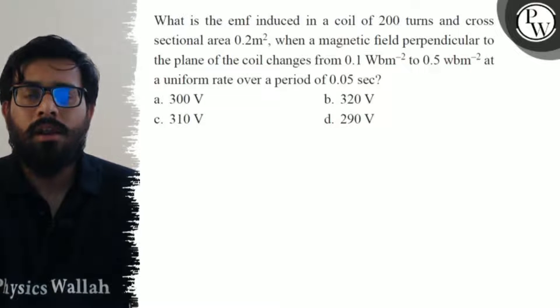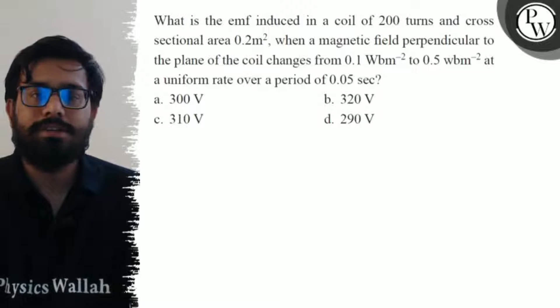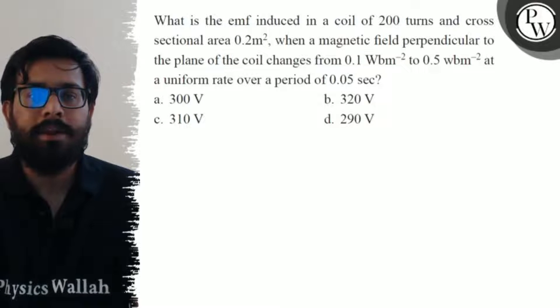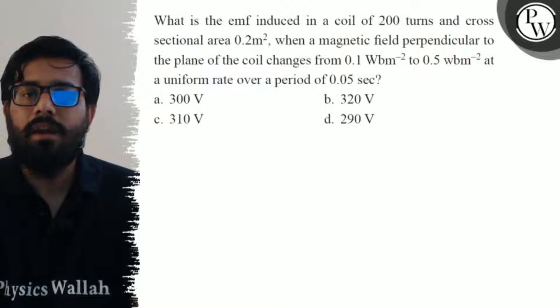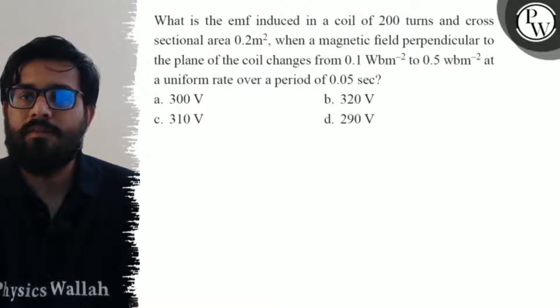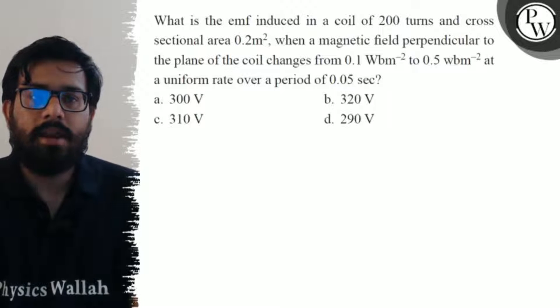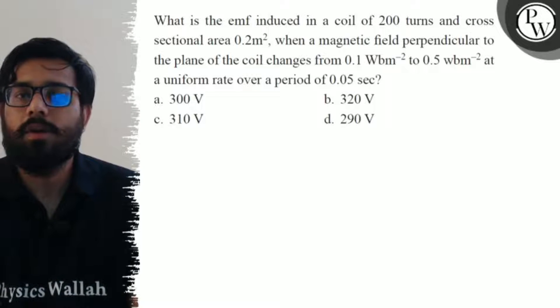What is the EMF induced in a coil of 200 turns and cross-sectional area 0.2 meter square when a magnetic field perpendicular to the plane of the coil changes from 0.1 Weber per meter square to 0.5 Weber per meter square at a uniform rate over a period of 0.05 seconds.